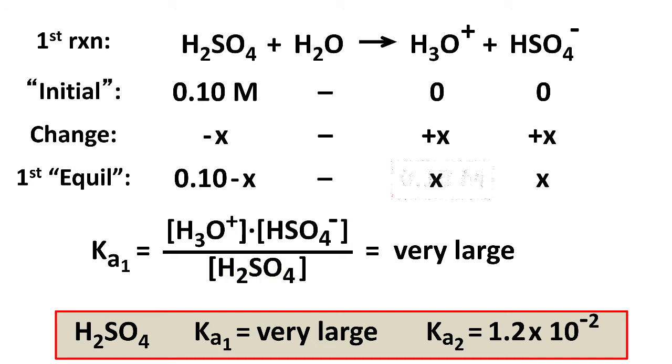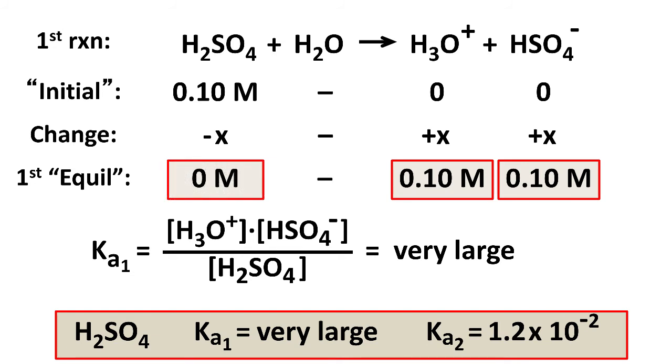And so we get 0.1 molar H3O plus, 0.1 molar HSO4 minus, and no H2SO4. It 100% dissociates. Kind of usual stuff.